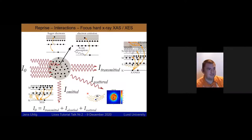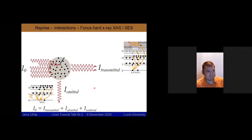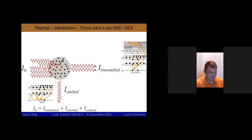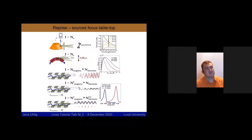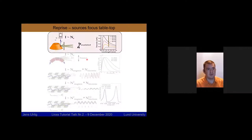Looking at what interactions we have: incoming photons are absorbed, and I probe the density of empty states with XANES or XAS, and the density of filled states with XES. I send in light of varying wavelengths. The major difference between large-scale facility experiments and lab-based experiments is really in the sources used — bending magnets, undulators, wigglers, or resonators at facilities versus X-ray tubes in the lab.